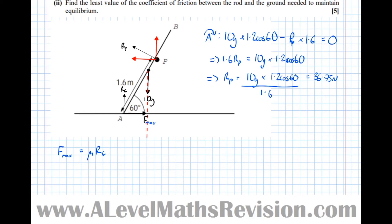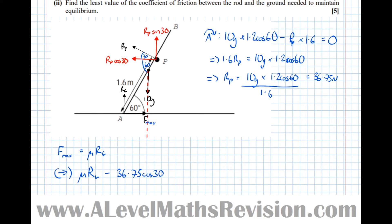By GCSE angle laws, the angle at the peg is also 60 degrees, making the complementary angle 30 degrees. So we have a triangle where Rp is the hypotenuse: the vertical component is Rp sin 30 and the horizontal component is Rp cos 30, where Rp = 36.75. Resolving horizontally for the whole system, taking rightward as positive: F max = μ RG, and taking forces to the left gives Rp cos 30, i.e. 36.75 cos 30, equal to zero.